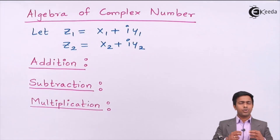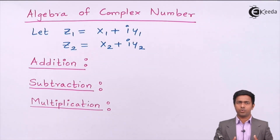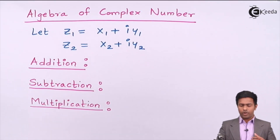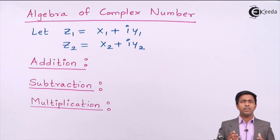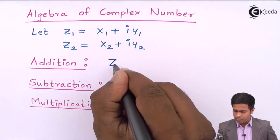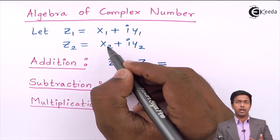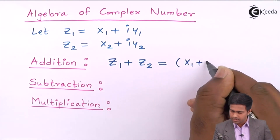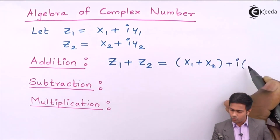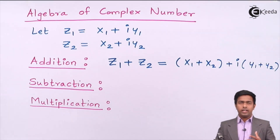I have taken two complex numbers z1 and z2. The value of z1 is x1 plus i·y1, and the value of z2 is x2 plus i·y2. For addition of two complex numbers, we add the real part with the real part and the imaginary part with the imaginary part. So z1 plus z2 equals (x1 plus x2) plus i(y1 plus y2).